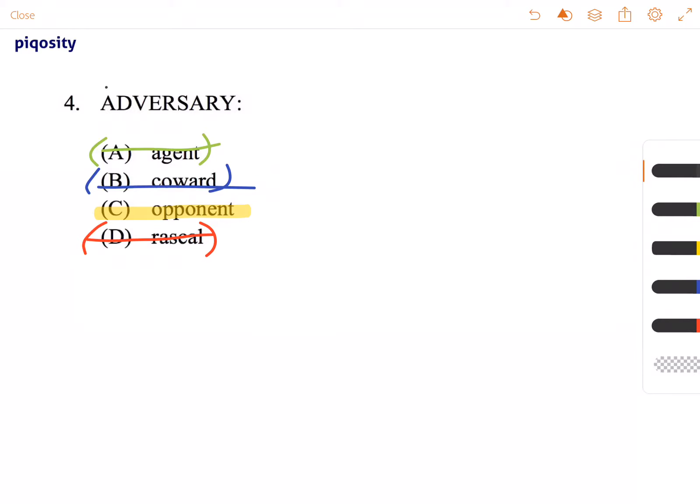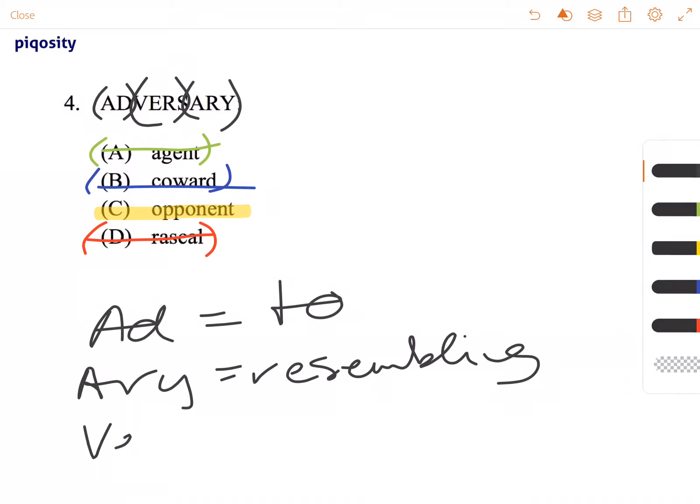If you break this down, AD means to, ARY means resembling or sharing qualities of, and then you have verse, the root word, change.